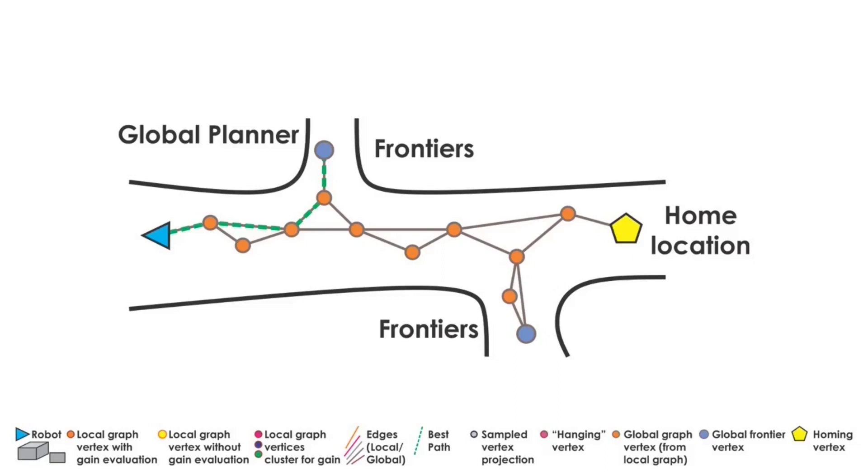The frontier selection takes place considering its volumetric gain, distance from the current location, and distance to the home location. The robot continues local exploration upon reaching the frontier.